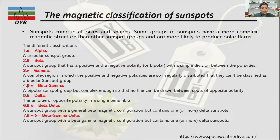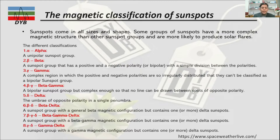The seventh classification is Beta-Gamma-Delta — a combination of those three types — sunspot groups with a Beta-Gamma magnetic configuration but containing one or more Delta sunspots. Finally, the eighth classification is Gamma-Delta: sunspot groups with a Gamma magnetic configuration but containing one or more Delta sunspots.